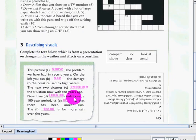Complete the text below, which is from a presentation on changes in the weather and effects on a coastline. We have the words compare, see, look at, shows, clear, and trend. Let's read it. Follow me as I read the presentation with the correct words from the box.